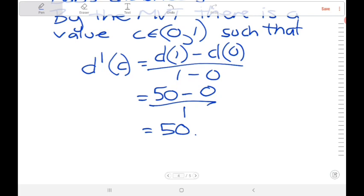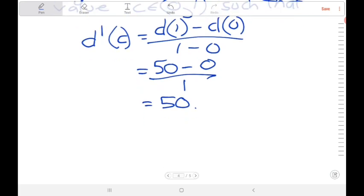Now, the derivative of the distance function is the velocity. That means at time C, Bob was traveling 50 kilometers per hour.